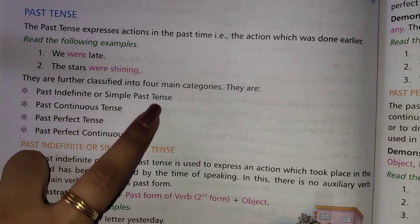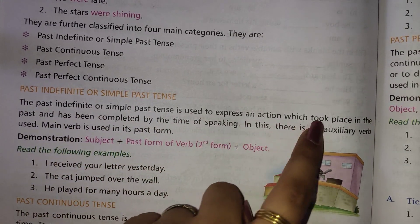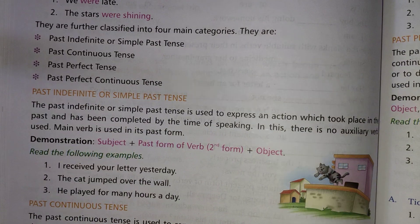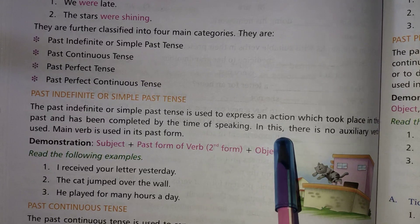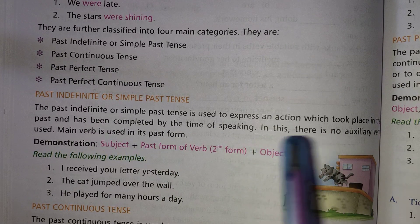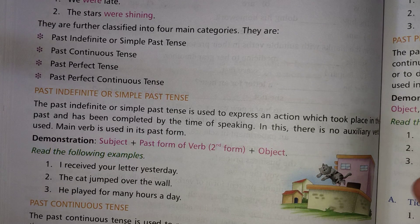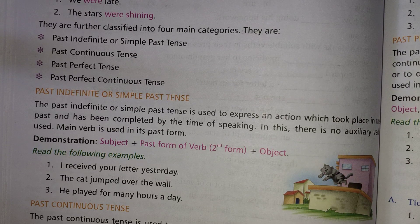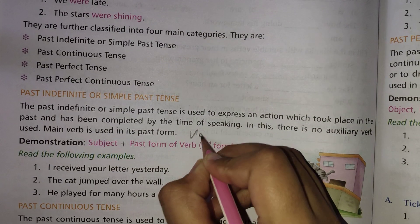Past indefinite or simple past tense is used to express an action which took place in the past and has been completed by the time of speaking. The action was done in the past and has been completed in the past. There is no auxiliary verb used — only the main verb is used, in its past form, which is the second form of the verb.